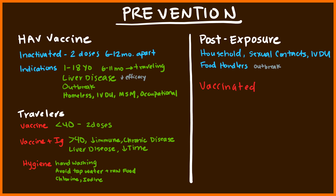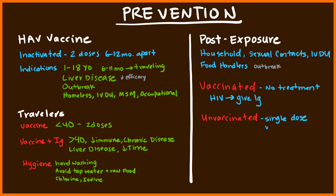For individuals who are already vaccinated, no post-exposure prophylaxis is needed — they already have the vaccine and are well protected. The only exception is individuals with HIV; give one dose of immunoglobulins because their immune system is weak. For the unvaccinated, they should receive a single dose of the vaccine or immunoglobulin within less than two weeks of exposure.